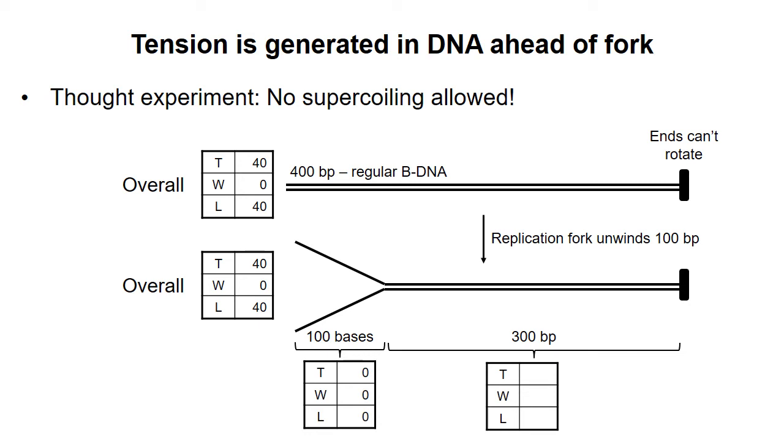So all of the DNA strand crossing must occur in the remaining 300 base pairs section. If we don't allow supercoiling, then writhe for this section remains zero.